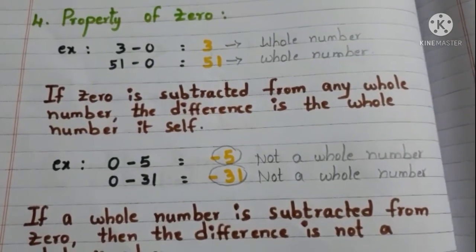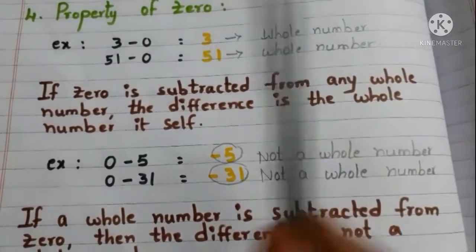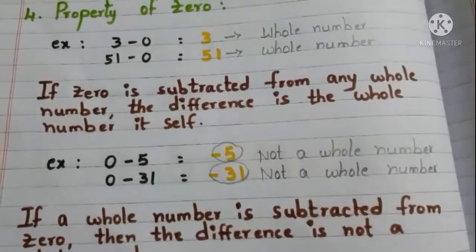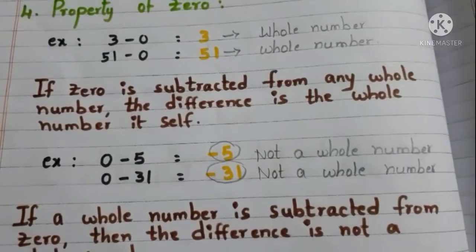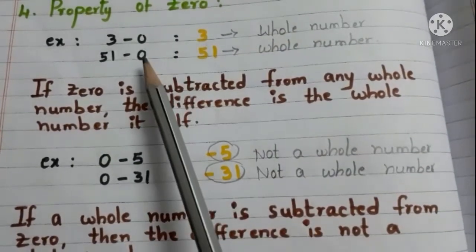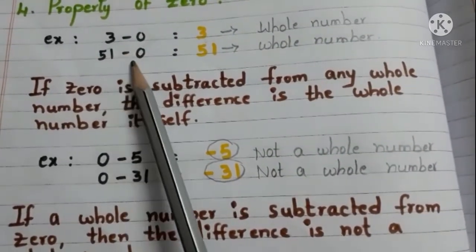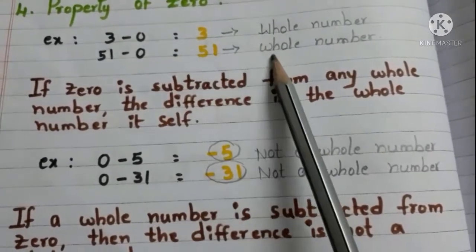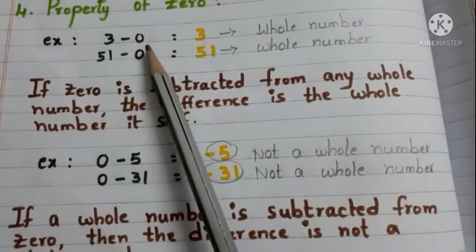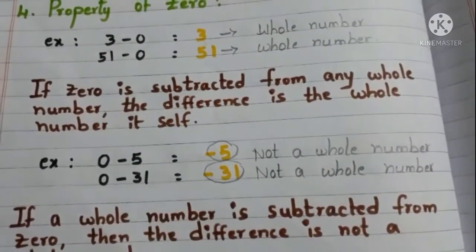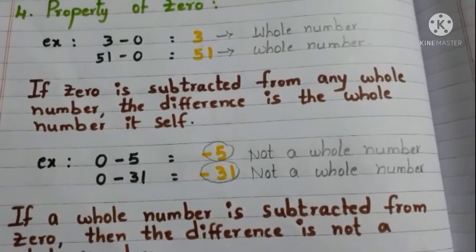Now, property of 0. Let us see with the examples. Subtract 0 from 3. 3 minus 0 is 3, and it is a whole number. We can say that if 0 is subtracted from any whole number, the difference is that whole number itself.